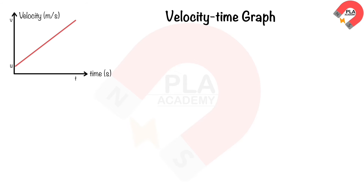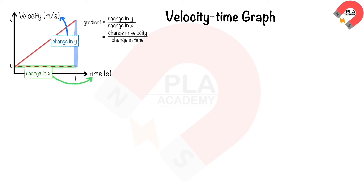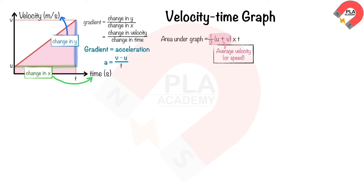Velocity-time graph: on a graph of velocity against time, the gradient is the ratio of change in velocity to change in time. The gradient of the velocity-time graph is the acceleration of the object. The area under the graph equals ½(u + v)t, which represents the distance moved.